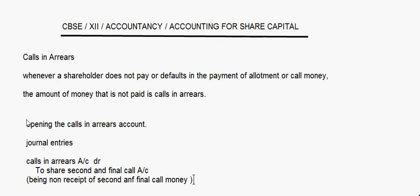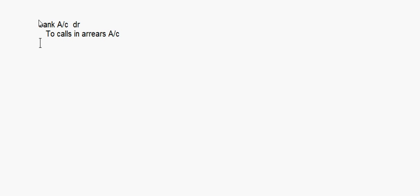Supposing the final call was due on the first of April and it was not paid by some 200 shareholders. Now after two months they pay that amount. Whenever the amount is received, we write bank account debit, to calls in arrears account. This is for receipt of calls in arrears at a later date.